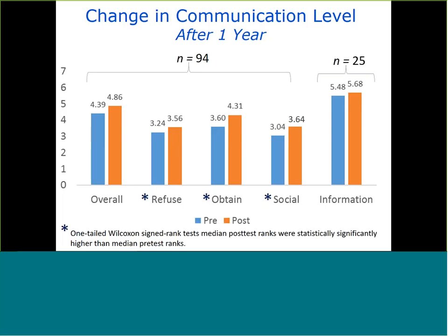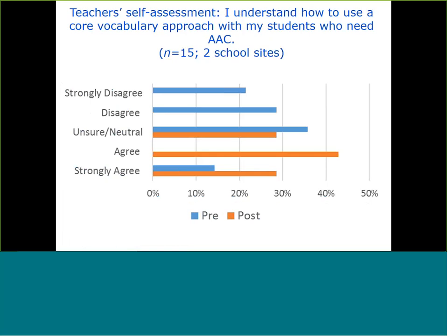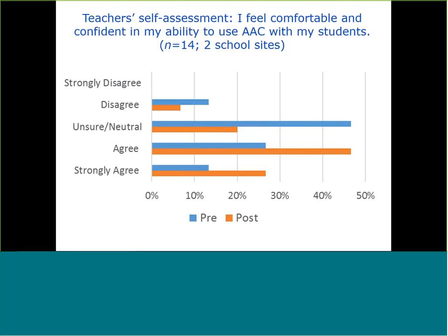Across our partner sites, we administered a self-assessment at the beginning and end of the year to look at change in teachers' perceptions of their skills and abilities — a 12-point Likert-style instrument on a five-point scale. For the statement 'I understand how to use a core vocabulary approach with my students,' the majority of teachers either disagreed or were unsure at the beginning of the year — with only 14% in agreement — and the percentage grew to 72% at the end of the year. For 'I feel comfortable and confident in my ability to use AAC with my students,' we saw a shift from 40% in agreement at the beginning of the year to 74% in agreement or strong agreement at the end of the year.